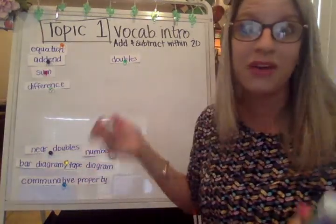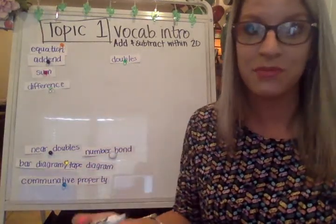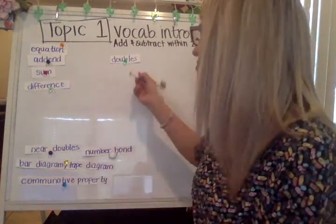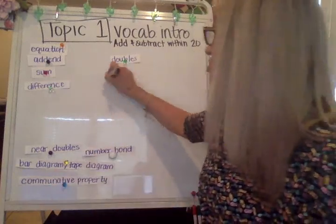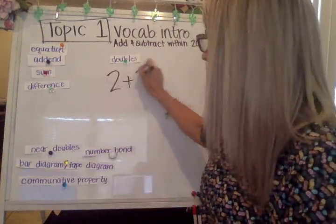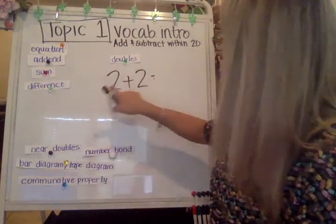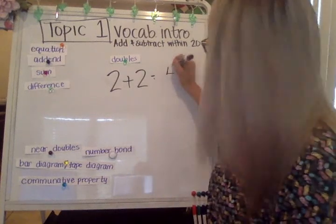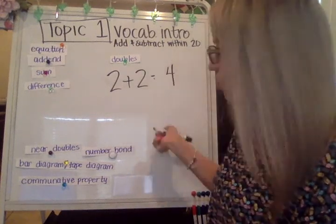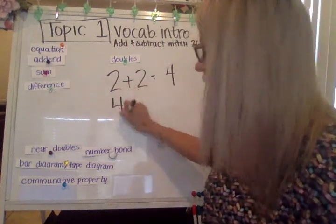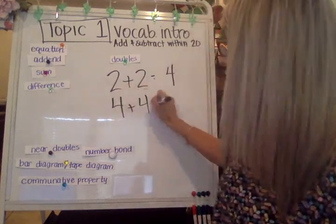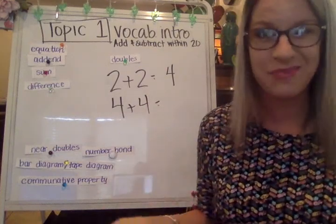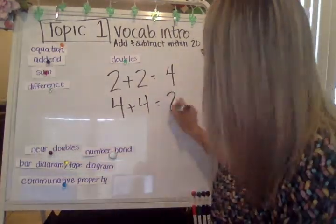I think about doubles as two of the same thing. When I repeat that little chant, it reminds me that doubles just means two of the same thing. So the doubles for two — the sum would be four. Four plus four — notice that both of these numbers are the same. Those are called doubles facts.